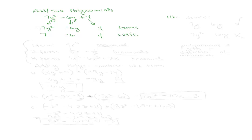Keeping that in mind, let's remember what like terms are. For example, 7y and 6y would be like terms, but 7y squared and 6y would not be like terms. For two terms to be like terms, they have to have the same variable and the same power.